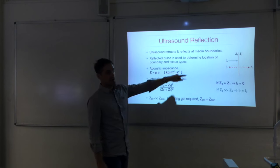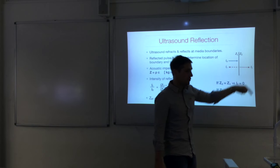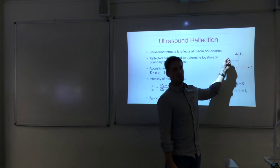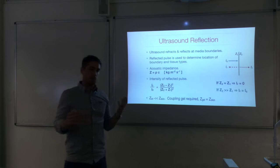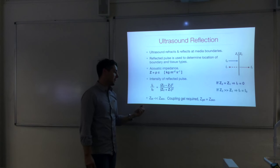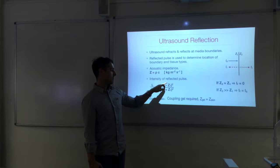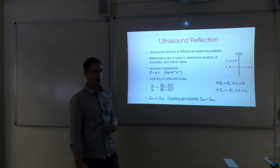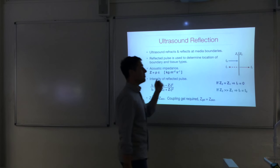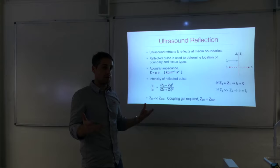If Z2 is approximately equal to Z1 — the acoustic impedances of the two tissues are very similar — then the reflected intensity will be approximately zero, meaning most or all of the ultrasound passes into the new tissue as if there is no boundary. If Z2 is much larger than Z1, the numerator and denominator become approximately equal, so IR approaches I0, meaning all incident ultrasound is reflected.